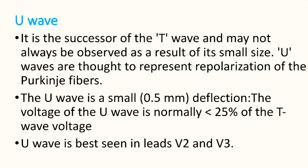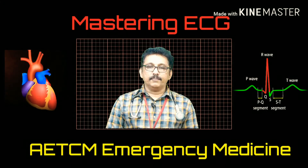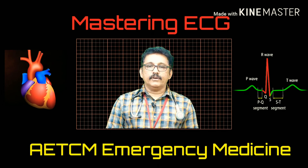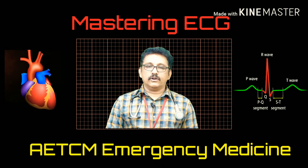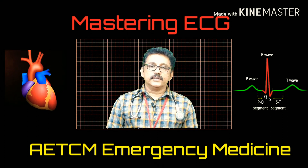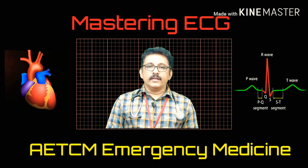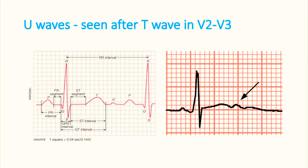U-waves are formed by Purkinje fiber repolarization and occur after the T-wave. They are less than 25% of the T-wave voltage, so you may not observe them in many patients. Even if seen, they do not have much clinical importance in many normal patients. U-waves are best seen in leads V2 and V3.